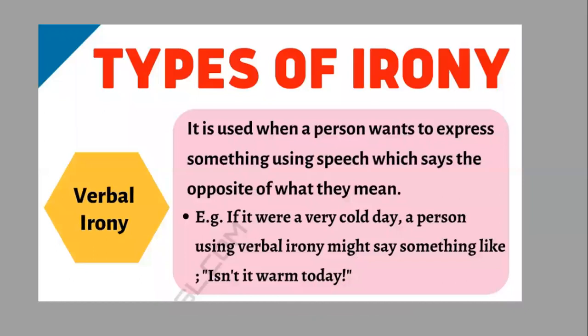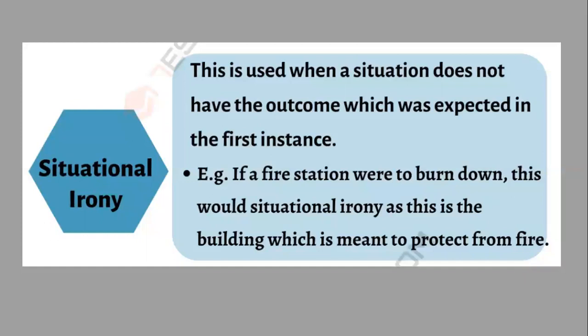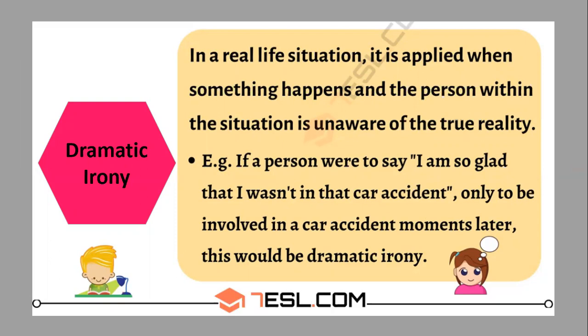We need to look at three types of irony. The first is verbal irony — used when a person says the opposite of what they mean. For example, on a very cold day someone might say, 'Isn't it a warm day?' Second is situational irony — when a situation does not have the expected outcome. For example, if a fire station were to burn down, that would be situational irony, as that building is meant to stop fires. The third is dramatic irony — when something happens and a person within the situation is unaware of the true reality. For example, if someone said, 'I'm so glad I wasn't in the car today,' only to be involved in a car accident moments later, that would be dramatic irony.